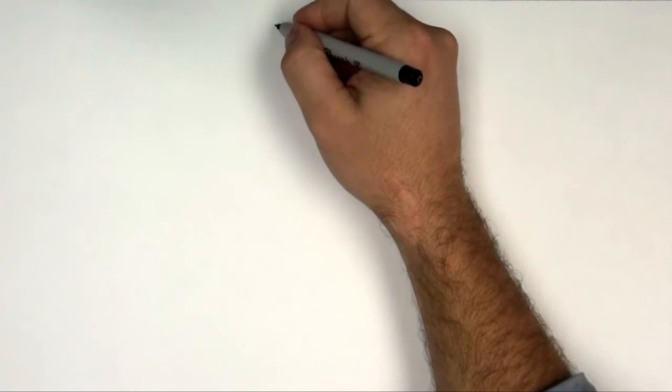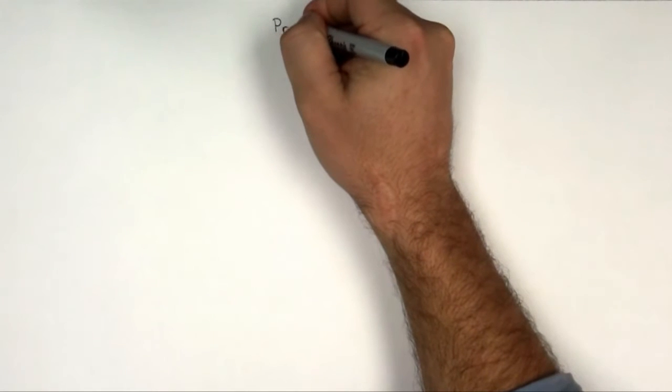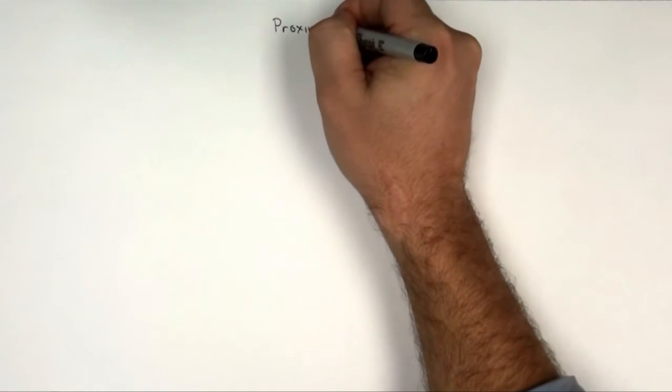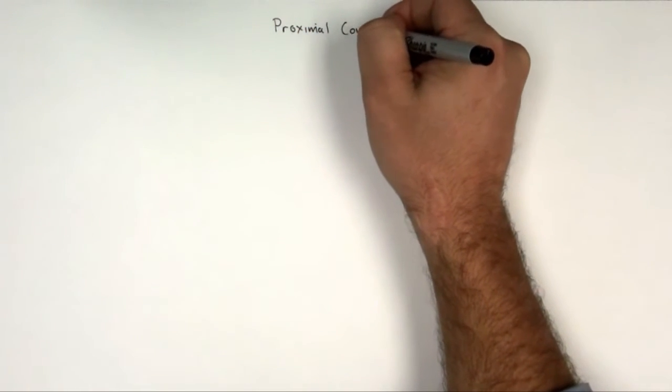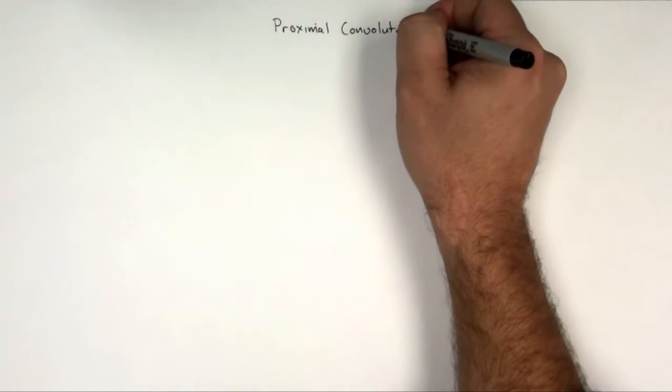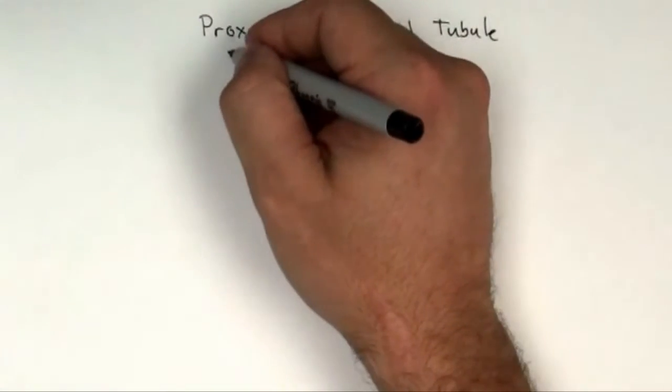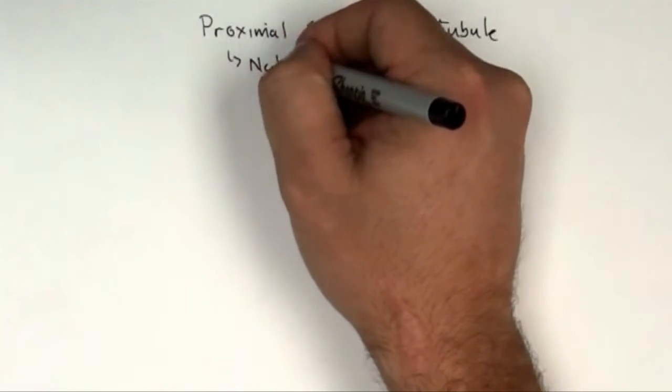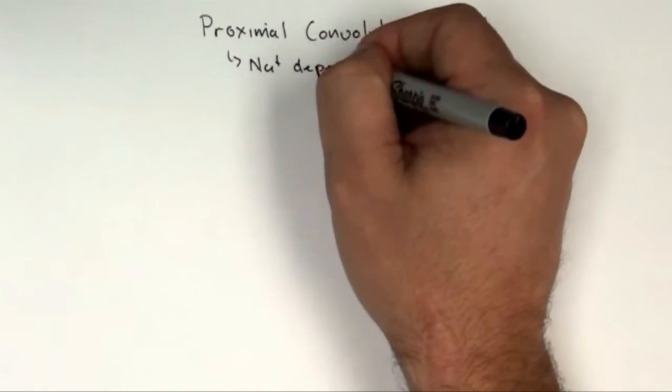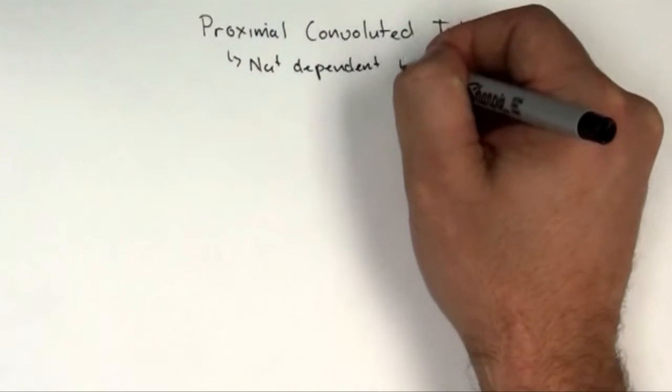So this video is to talk about something called the proximal convoluted tubule. The proximal convoluted tubule is part of the nephron, which is part of the kidney, which is the filtering organ of the body. One of the things I want to focus on is sodium dependent reabsorption.